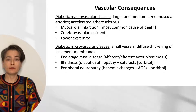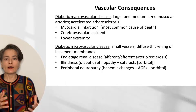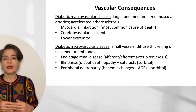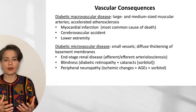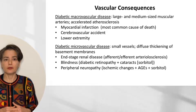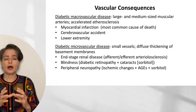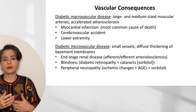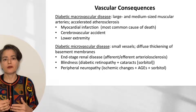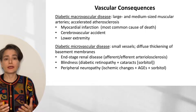How do advanced glycation end products contribute to vascular consequences of chronic diabetes? For macrovascular disease — large and medium-sized muscular arteries — the primary issue is accelerated atherosclerosis due to all the factors mentioned. This leads to myocardial infarction, the most common cause of death in diabetic patients, as well as cerebrovascular accident. In peripheral vascular atherosclerosis, patients initially present with ischemic findings such as claudication — increased pain with walking due to ischemia — which can then lead to frank gangrene necessitating amputation.